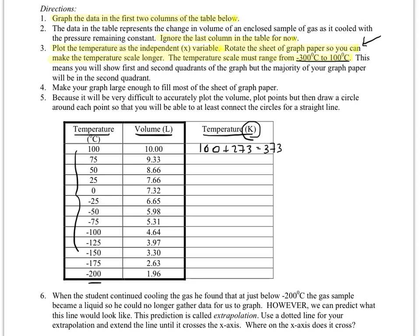So I think what we should do is have you actually flip over to your graph in just a minute here, and we'll set it up together. But before we do that, I want to look at the numbers we're going to be graphing. Your temperature values are nice, even, whole numbers, so they should be pretty easy to graph. Right? 100, 75, so on and so forth, all the way down to negative 200.